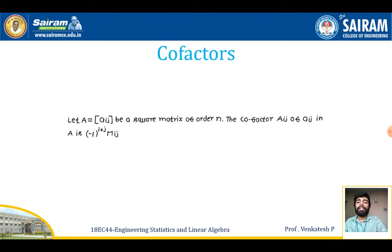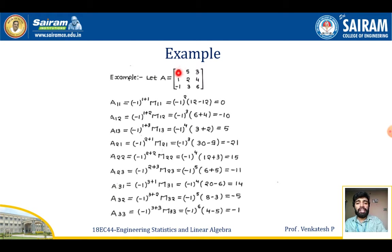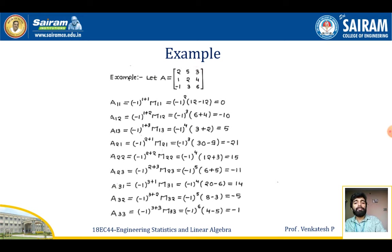To find the cofactor of entry 2, which is A11: since i=1, j=1, we get (−1)^(1+1) × M11 = (−1)^2 × 0 = 0. For A12, i=1, j=2: (−1)^(1+2) × M12 = −10. For A13, i=1, j=3: (−1)^(1+3) × M13 = 5. For A21, i=2, j=1: (−1)^(2+1) × M21 = −21.